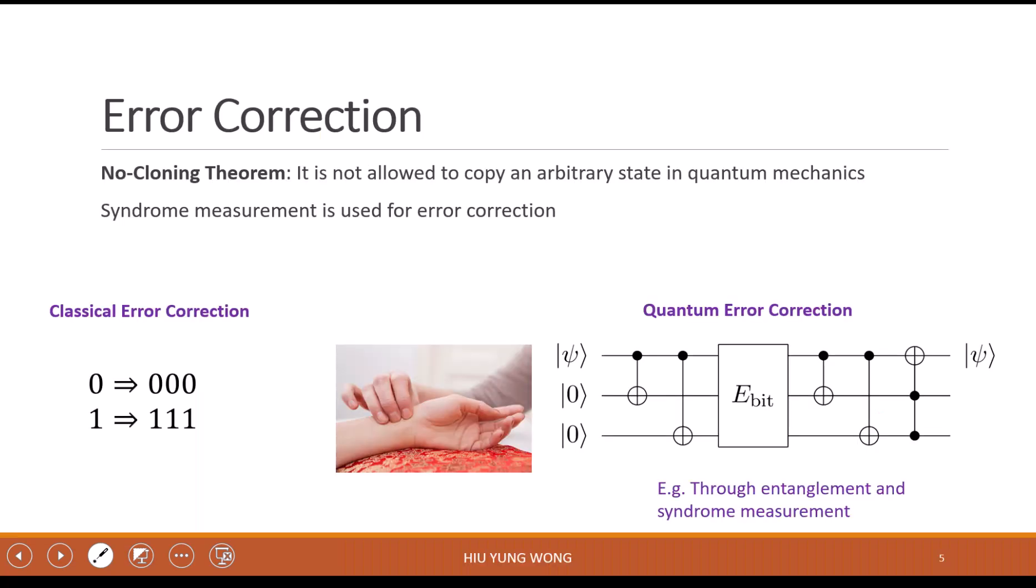But if I give you a general state such as |ψ⟩ equals alpha |0⟩ plus beta |1⟩, this is the most general state. Alpha and beta can be complex numbers, right? So this serves as part of review.